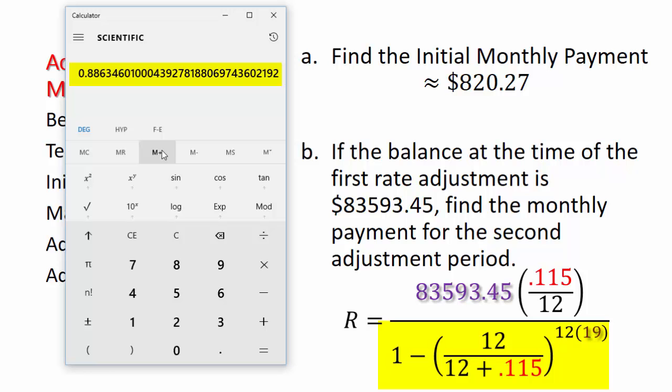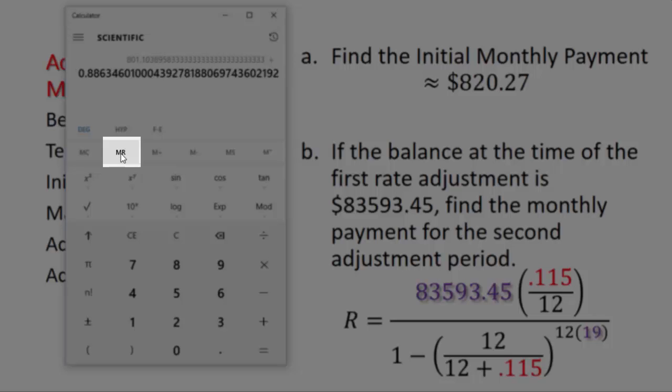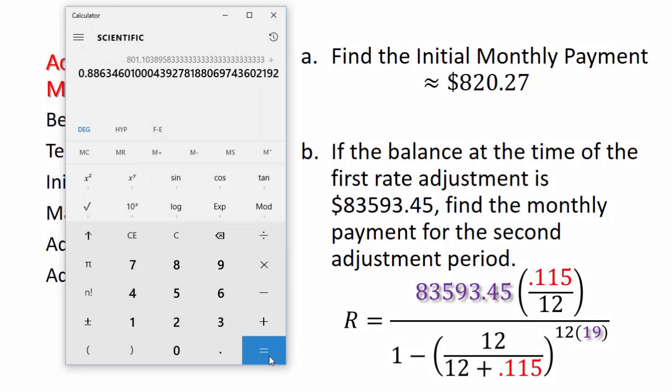Now let's calculate the numerator and then divide by the denominator. So I'm going to clear. We're going to say 83593.45 times 0.115 divided by 12 equals. And this is the value of the numerator. And we're going to divide that by the value of the denominator hitting memory recall. And hit equals.